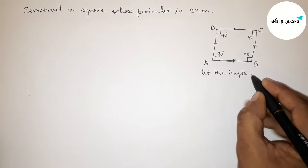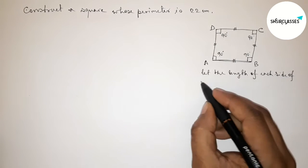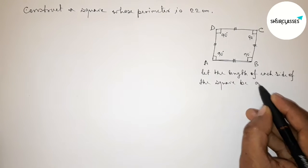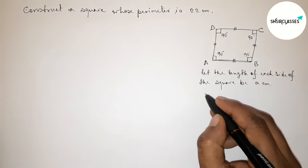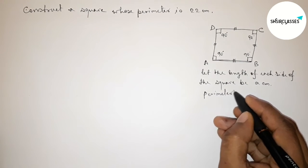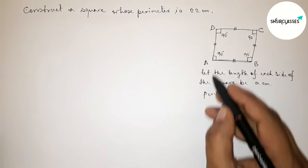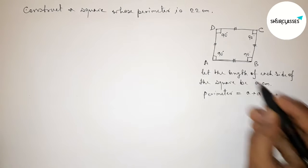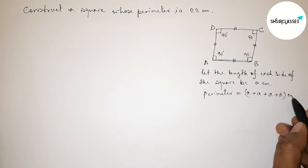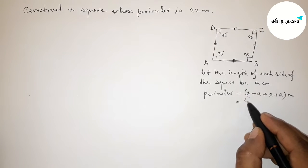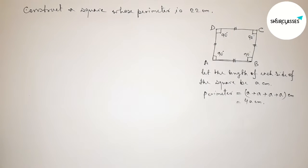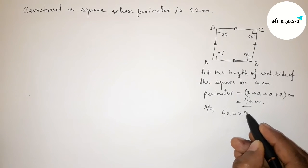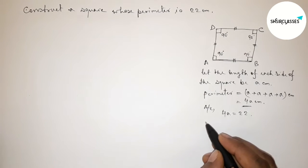Let the length of each side of the square be 'a' centimeters. The perimeter equals the sum of all four sides: a + a + a + a = 4a centimeters. According to the given condition, this perimeter must equal 22, so 4a = 22.